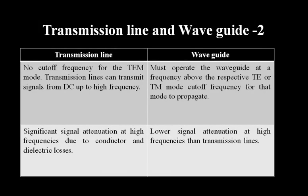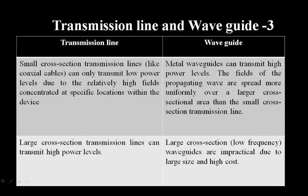For a normal transmission line there is significant signal attenuation at high frequency due to conductor and dielectric losses, and the skin effect. In waveguides, signal attenuation is lower than in transmission lines. Transmission lines have a small cross-sectional area like a coaxial cable and can only transmit low power levels due to high fields concentrated at specific locations, while waveguides have a larger cross-sectional area and can handle more power.